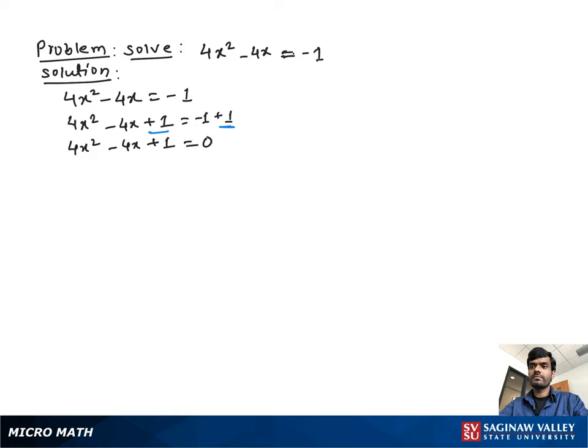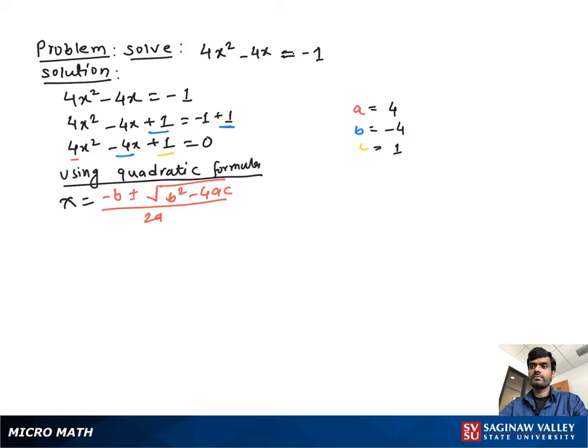This is the standard form of a quadratic equation. We determine the values: a = 4, b = -4, c = 1.